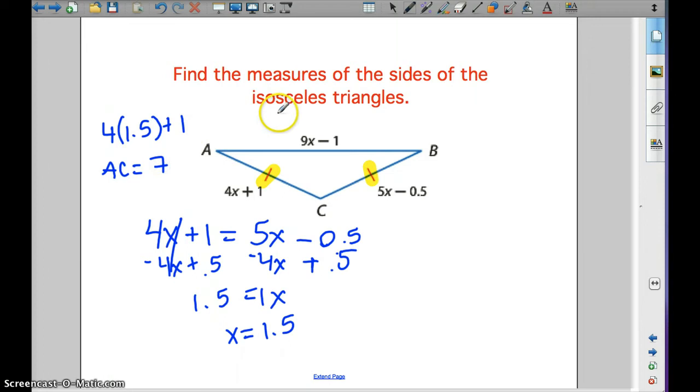For AB, we can take 9 × 1.5 - 1, and we get 12.5. Do we need to find BC? We don't have to because we already know AC and BC are the same, so CB = 7. Our side measures are 7, 7, and 12.5.